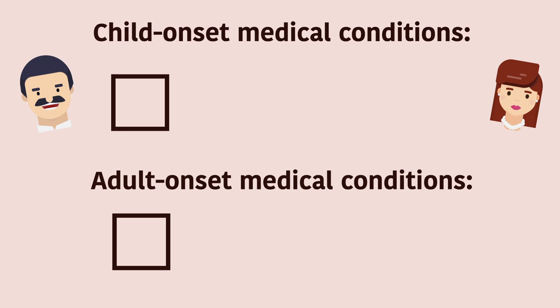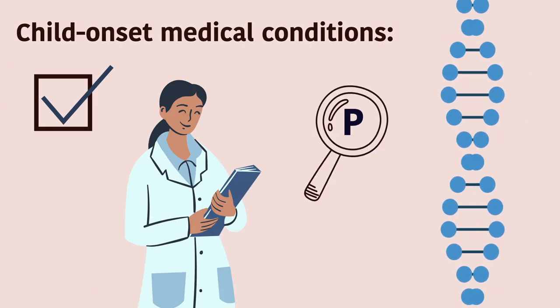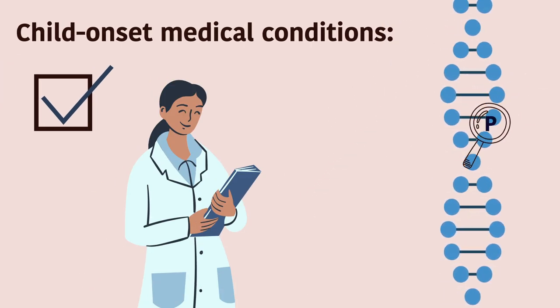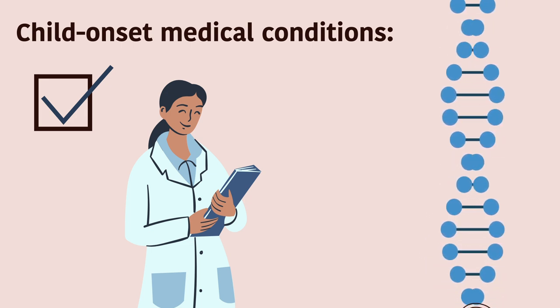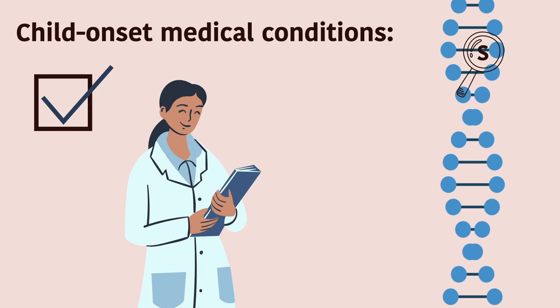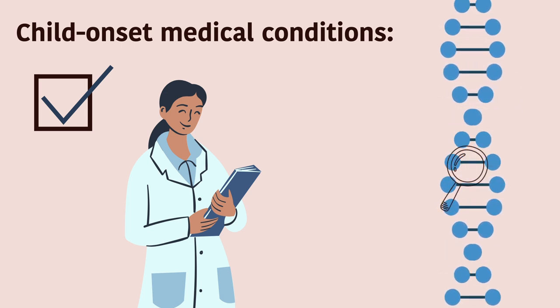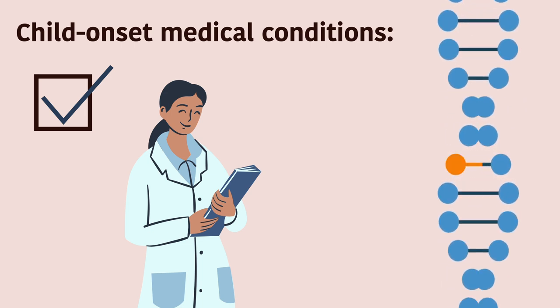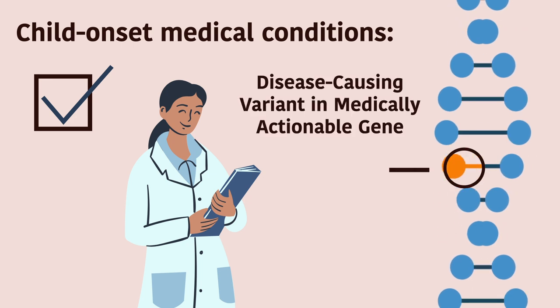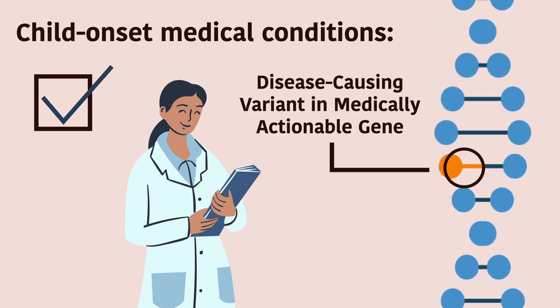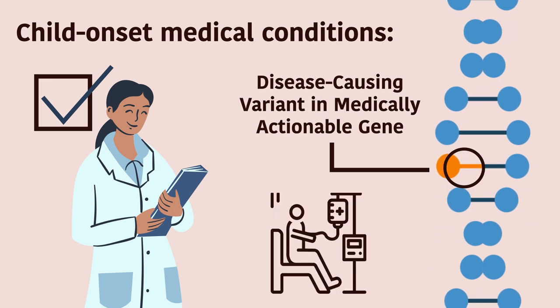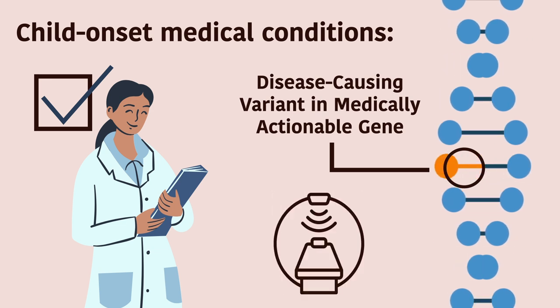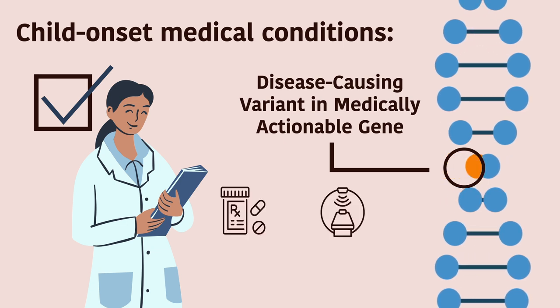In Michael's case, let's say his parents chose to learn about childhood onset medically actionable conditions, but not those related to adult onset actionable conditions. The laboratory staff will then look for any primary findings that can explain his behavior, and will also look into each gene that is related to a childhood onset medically actionable condition. If they find a potentially harmful variant in one of these genes, Michael's doctors can immediately start a treatment plan to either prevent or treat the actionable condition, based on what therapeutic measures are available.